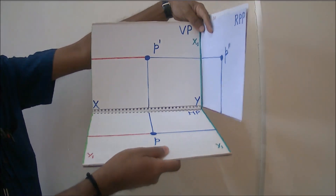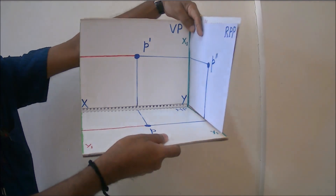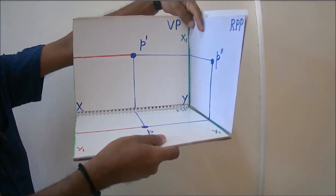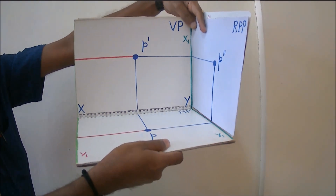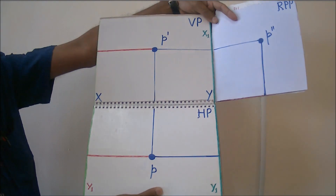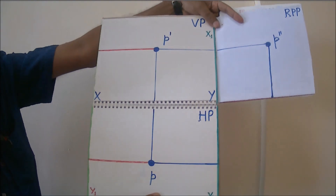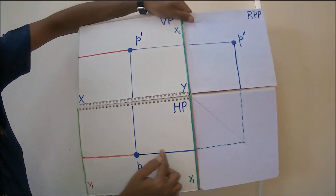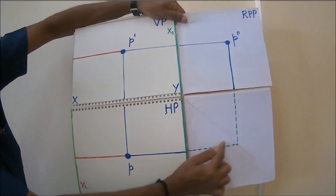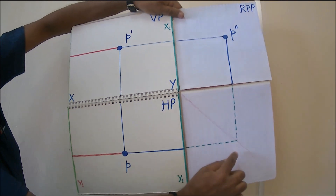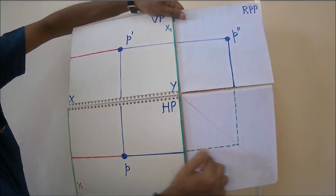To connect the top view and left side view, which were positioned like this before, we draw a 45-degree line and connect them like this.